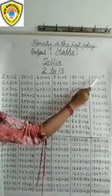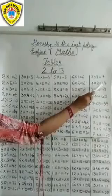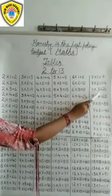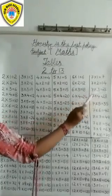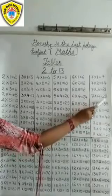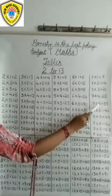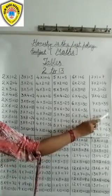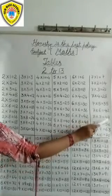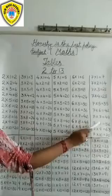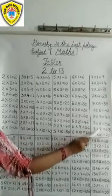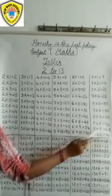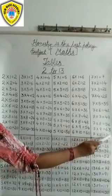7 1s are 7. 7 2s are 14. 7 3s are 21. 7 4s are 28. 7 5s are 35. 7 6s are 42. 7 7s are 49. 7 8s are 56. 7 9s are 63. 7 10s are 70.